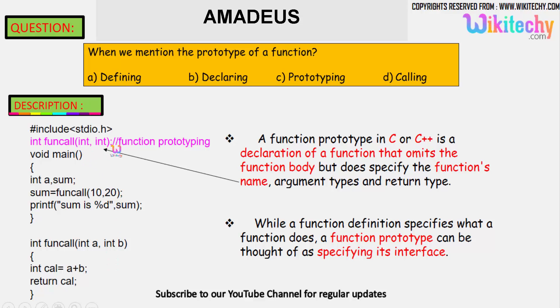A function prototype in C or C++ is a declaration. You are able to see there is a function call. It's declared here. You have two parameters and it's returning something.